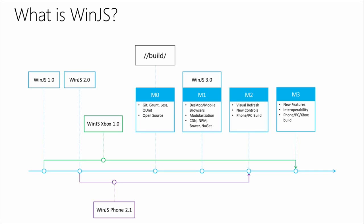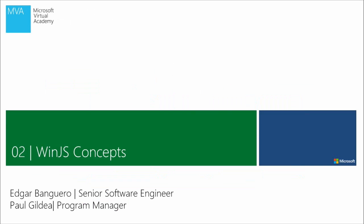We worked heavily on making WinJS modular and making sure that you could get it from your various package managers with all the other JavaScript libraries that you know and love. We're on GitHub, and we encourage you to go there and participate with us — issue pull requests, feature requests, whatever you need. We're really interested in what you, the developers, want to see in our library. So with that, we're going to talk about some of the basic WinJS concepts to get you up and running.